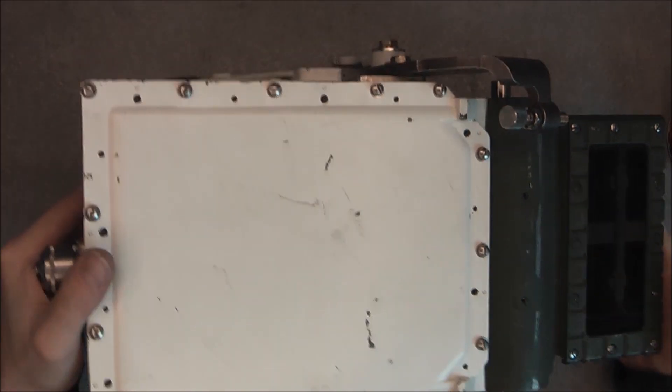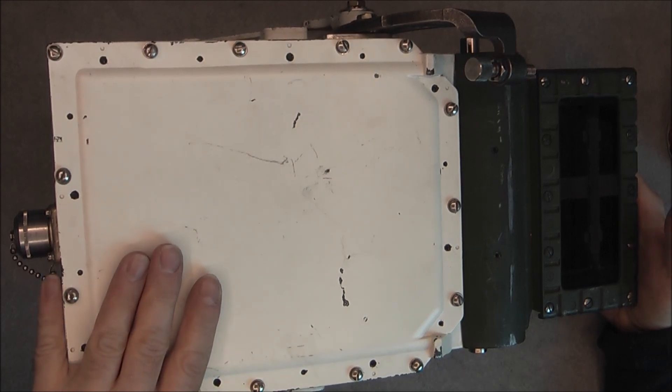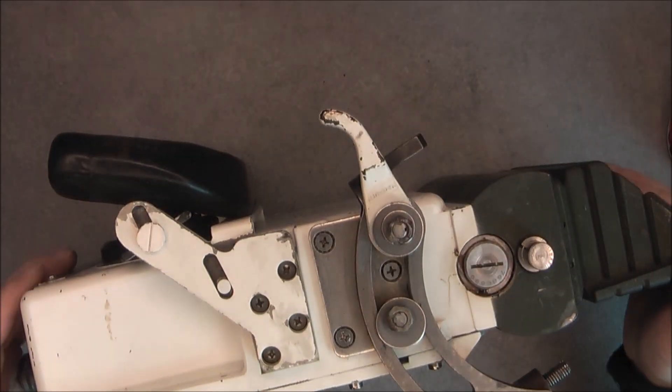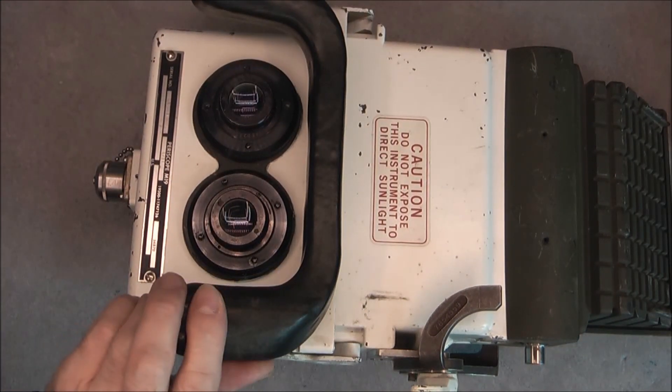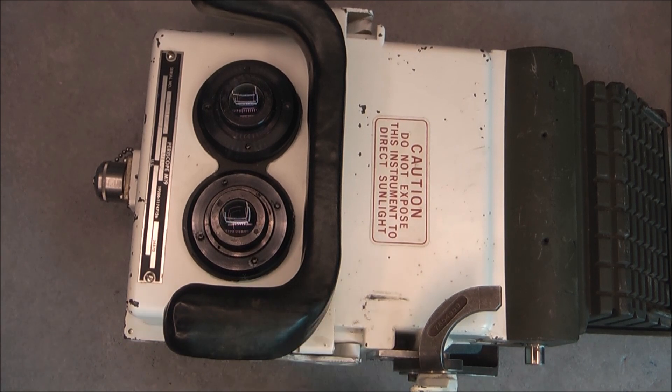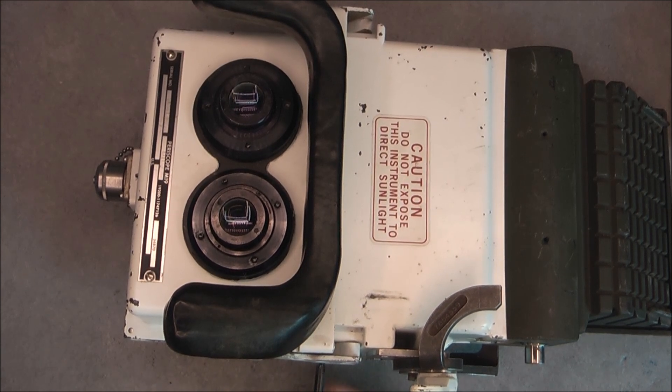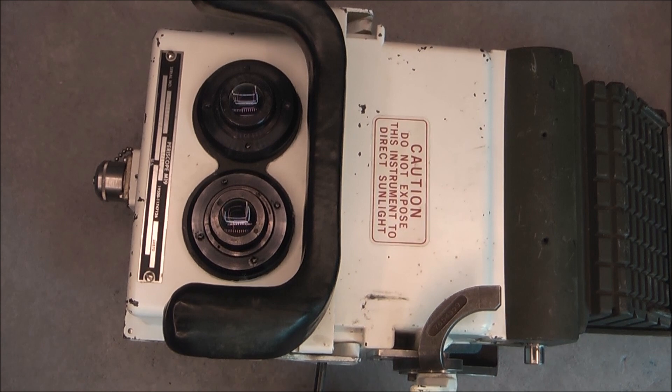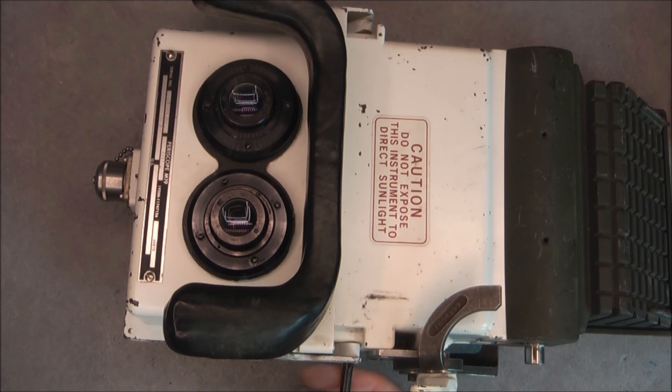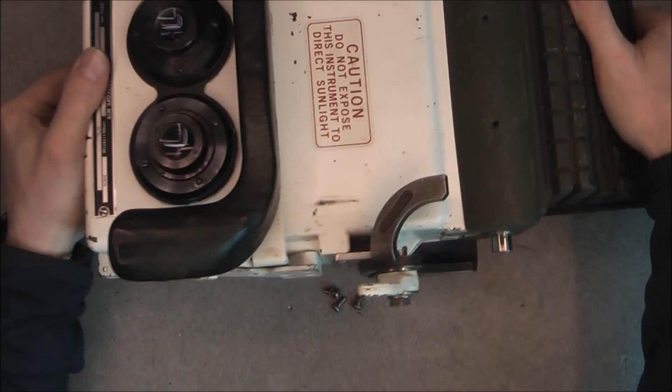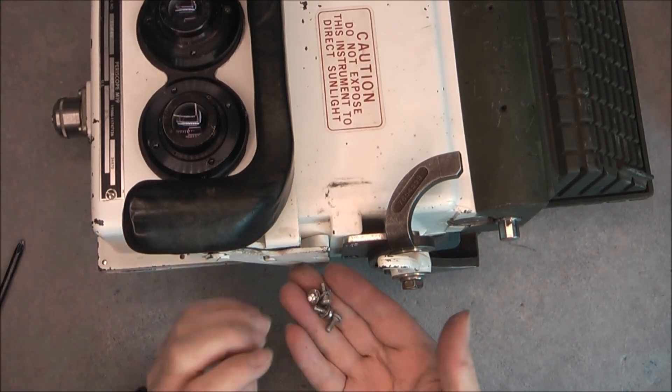So we have a big access panel here which will give access to the contents. But for this I need first to unscrew the eyepiece here because it is in the way and also this one. So we have, of course it is Imperial hardware because it is US made. Very nice quality by the way, stainless steel screws. Quite good ones in Imperial but they are good.